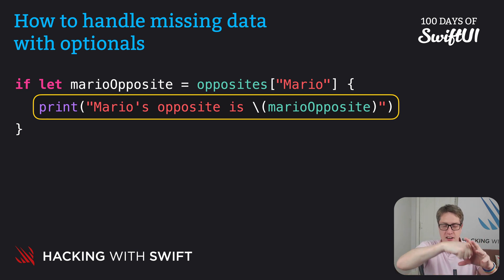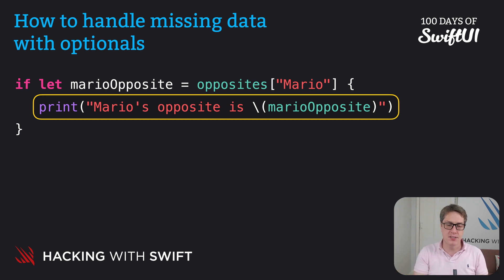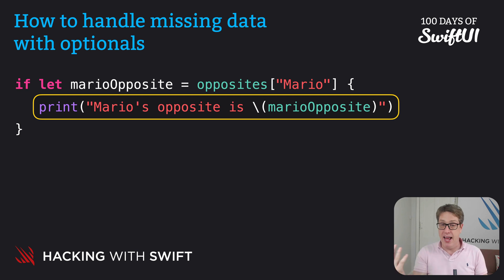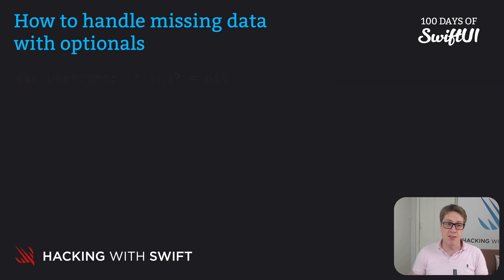We were able to unwrap the optional, so the condition's body runs. Mario's opposite is marioOpposite — a real string, not an optional string. We removed the optionality: we reached in, found a value inside, took it out as a real string, and put it into marioOpposite as a constant. The condition's body will only run if the optional had a value inside. If you want to have an else block for when there's no value inside, that's perfectly fine.